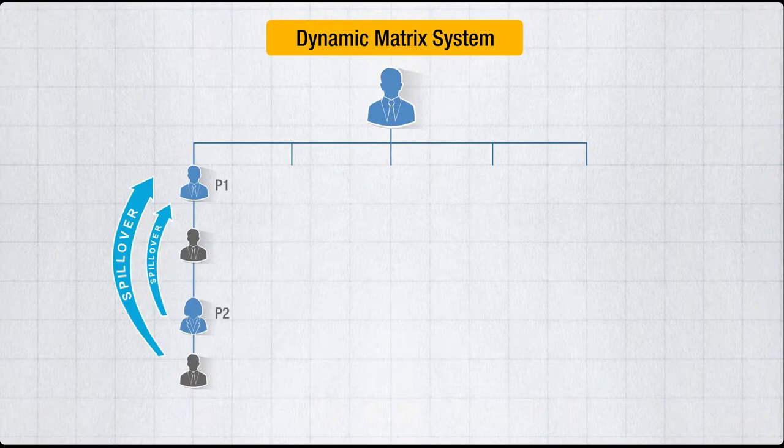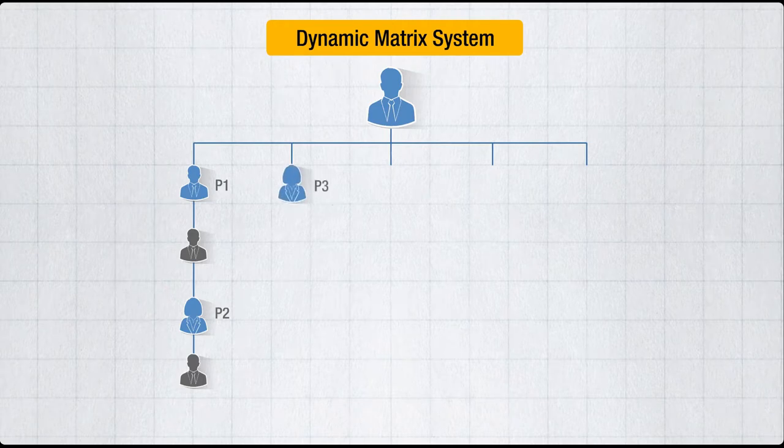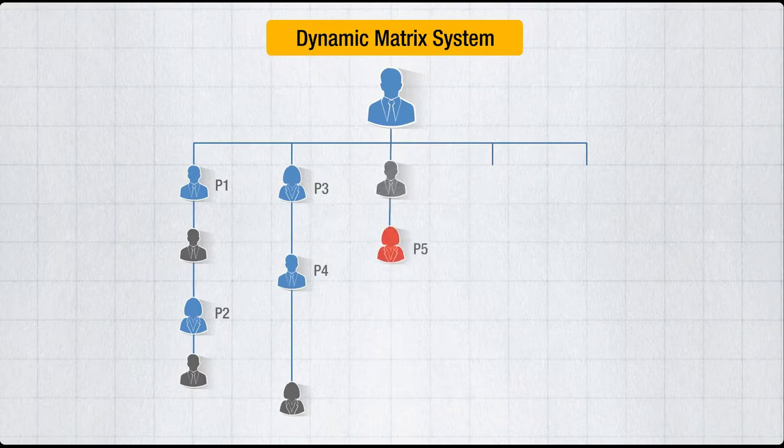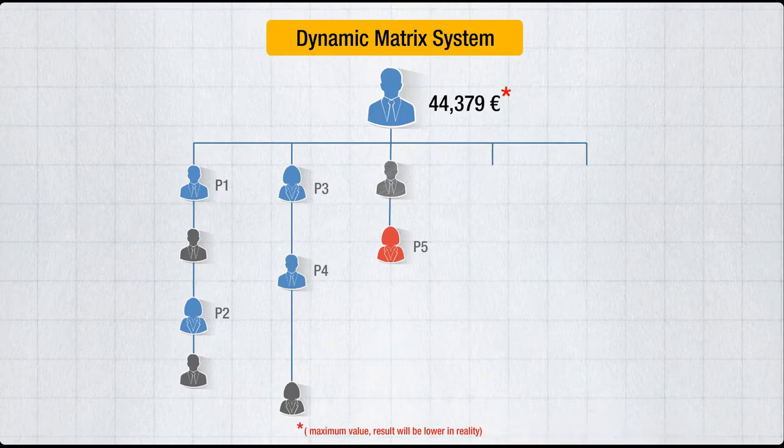Your third person goes into your second leg, and your referral number four in the downline of person three. This spillover is now in leg two. With person five, your payline expands to 3x, giving you 40,000 euros more income perspective. The next person helps person five to get successful because your person six goes in the downline of person five.